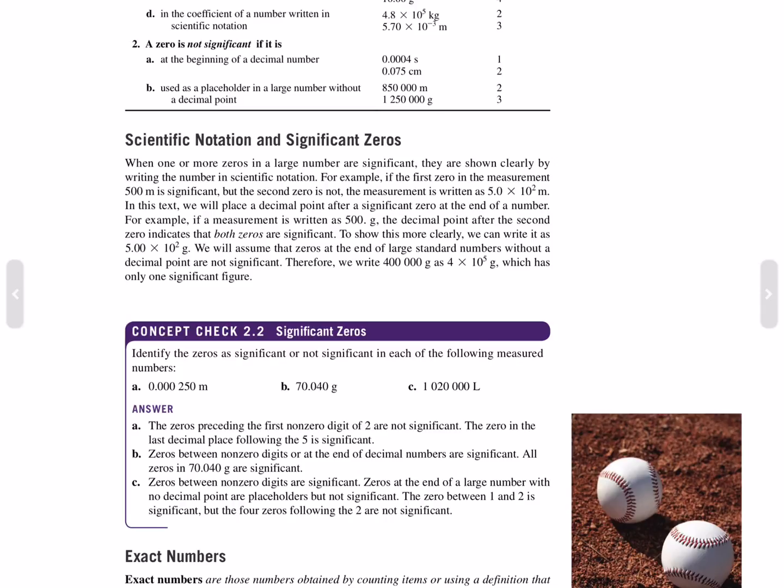For example, if a measurement is written as 500. grams, the decimal point after the second zero indicates that both zeros are significant. To show this more clearly, we can write it as 5.00 times 10 to the 2 grams. We will assume that zeros at the end of large standard numbers without a decimal point are not significant. Therefore, 400,000 grams is 4 times 10 to the 5, which has only one significant figure.